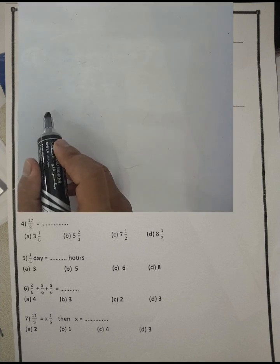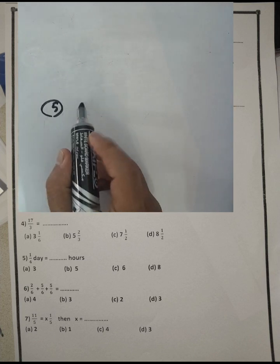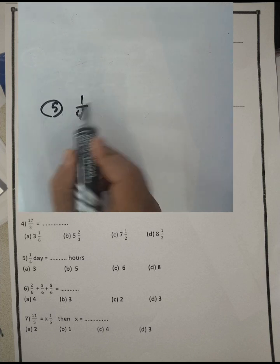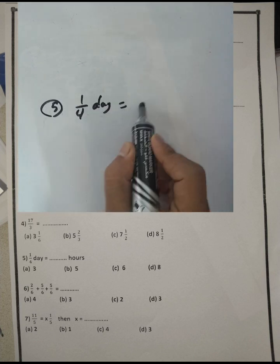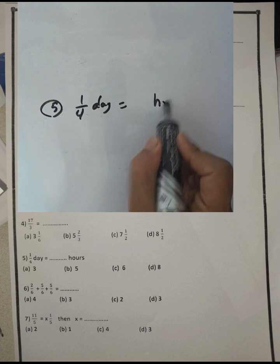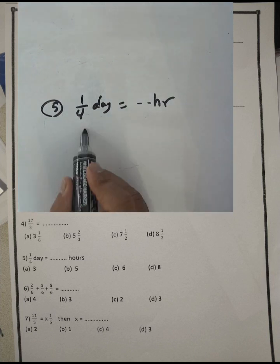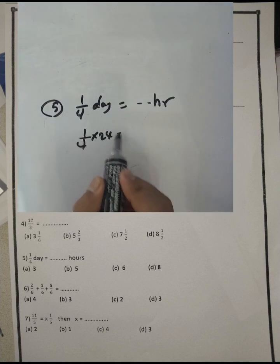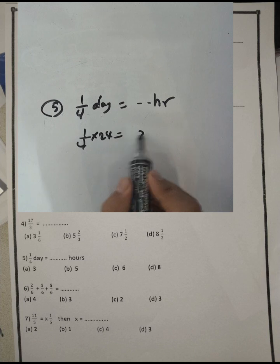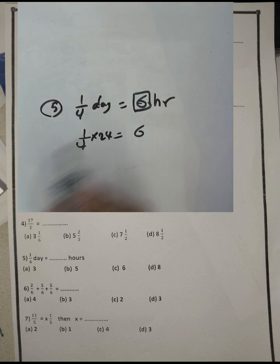Question number five: what is one fourth of a day in hours? We know one day equals 24 hours, so one fourth of 24 equals 24 divided by four, which equals six. The answer is six hours.